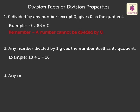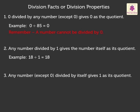3. Any number except 0 divided by itself gives 1 as its quotient. For example, 26 divided by 26 is equal to 1.